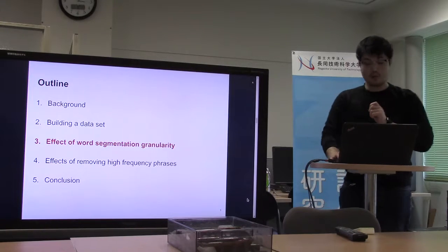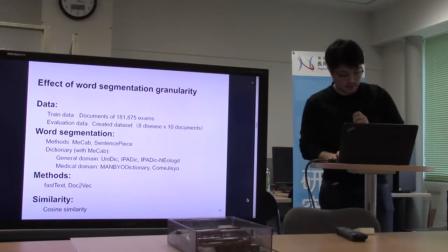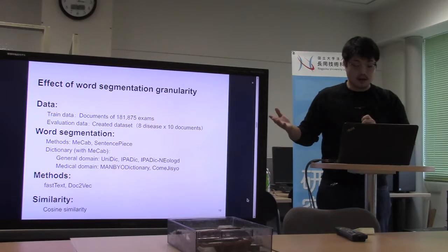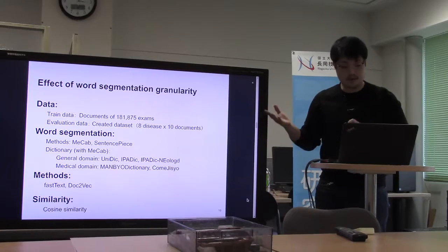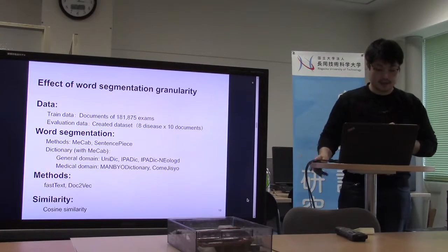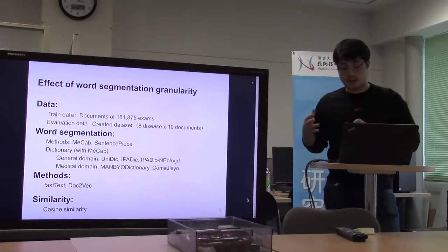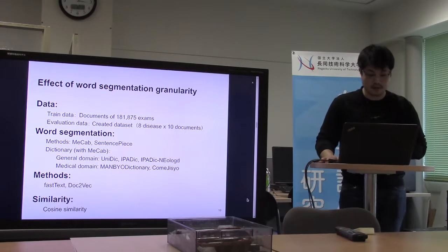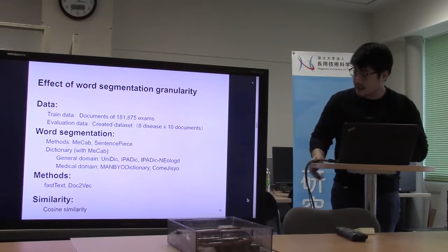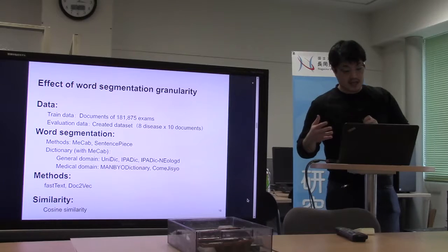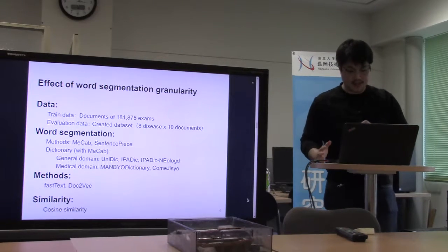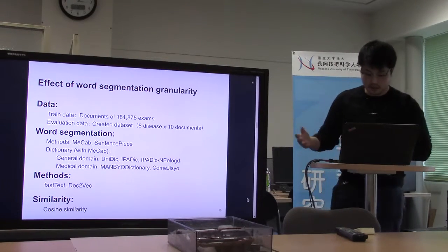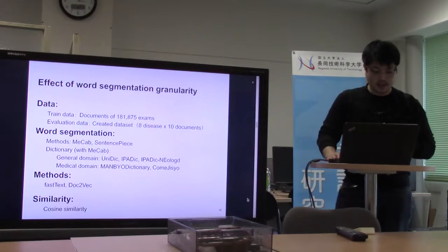Next, we checked the effect of segmentation granularity. We used the dataset for experiments, creating a set for evaluation and using the remaining documents for training. We used two methods for word segmentation. The first is the Japanese morphological analyzer, MECAB. The second is SentencePiece. When using MECAB, we used five dictionaries — three from the general domain and two from the medical domain. We calculated similarity by cosine similarity.